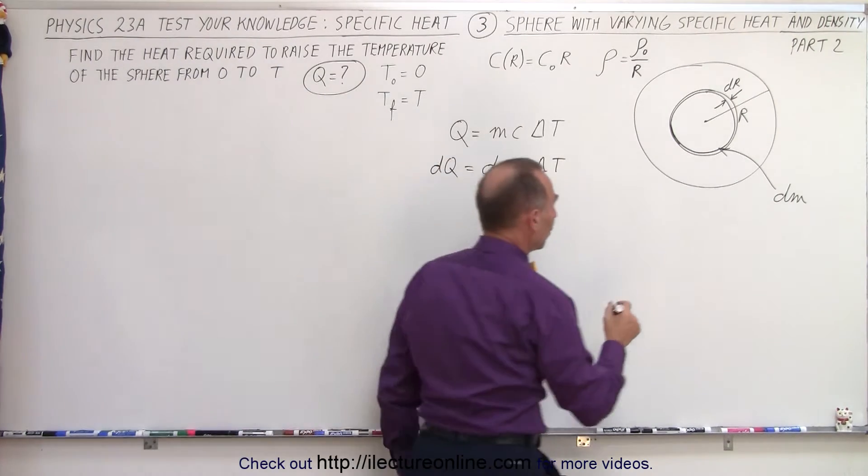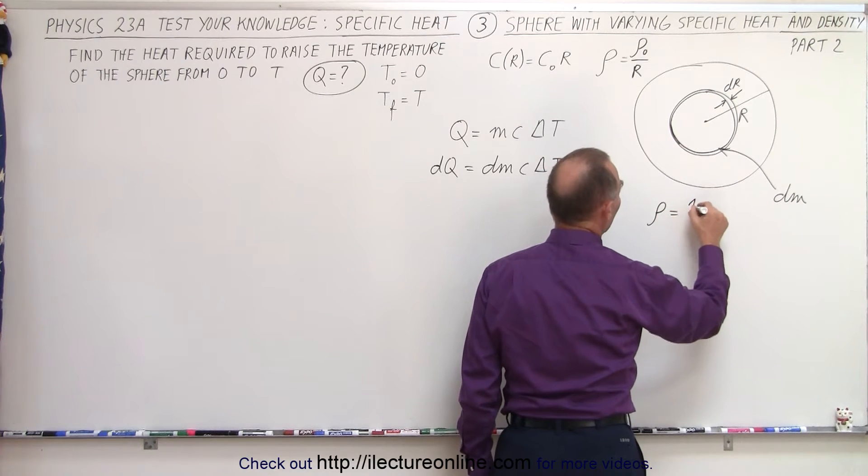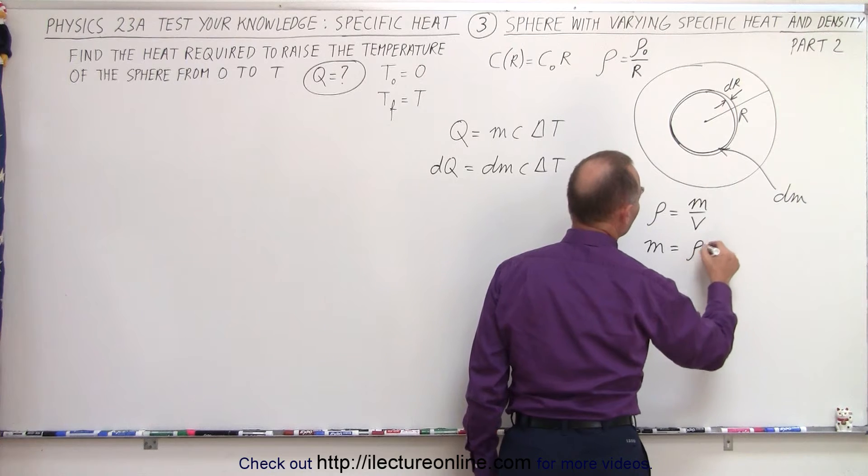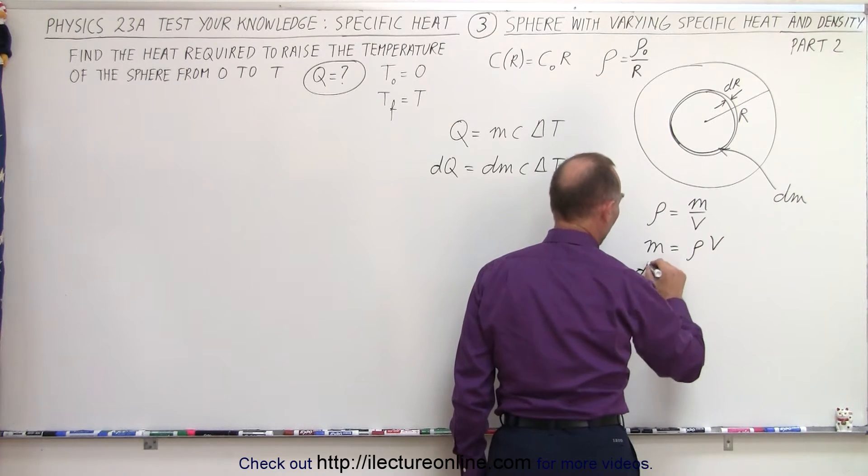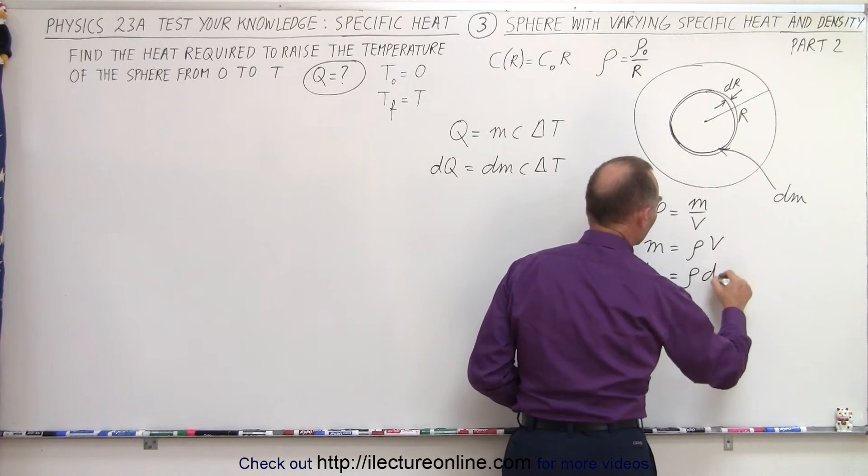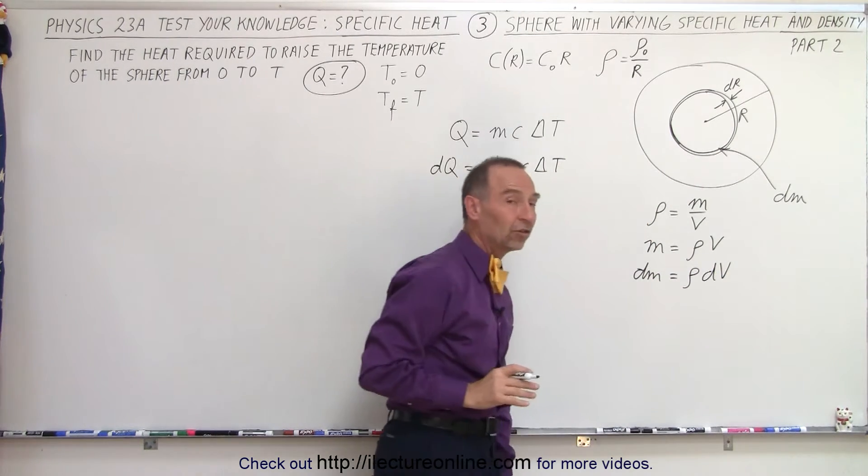To do that, we find the relationship that the density is equal to the mass divided by the volume, which means that the mass is equal to the density times the volume. And a small amount of mass of that spherical shell is going to be equal to the density times the small amount of volume of that shell.